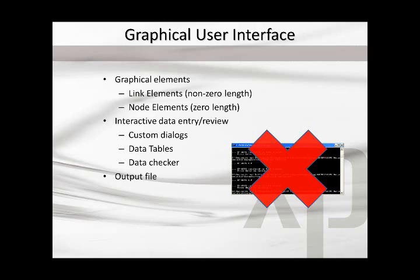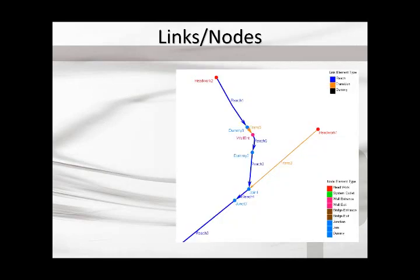The elements of WSPG are either link elements or node elements, and interactive data entry and review comes along with that. Data is input in custom dialogues and tables, and the output file is still available — we're now in the graphical user interface rather than the DOS window. Here's an illustration of the links and nodes, color coded to emphasize the discussion. You can see the headworks — the red nodes at the top, zero-length — and the associated data you would input, with each reach input as a link.